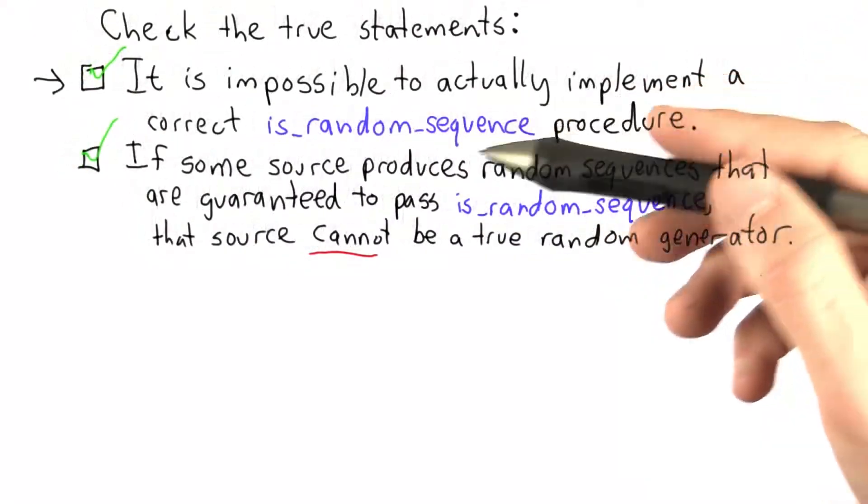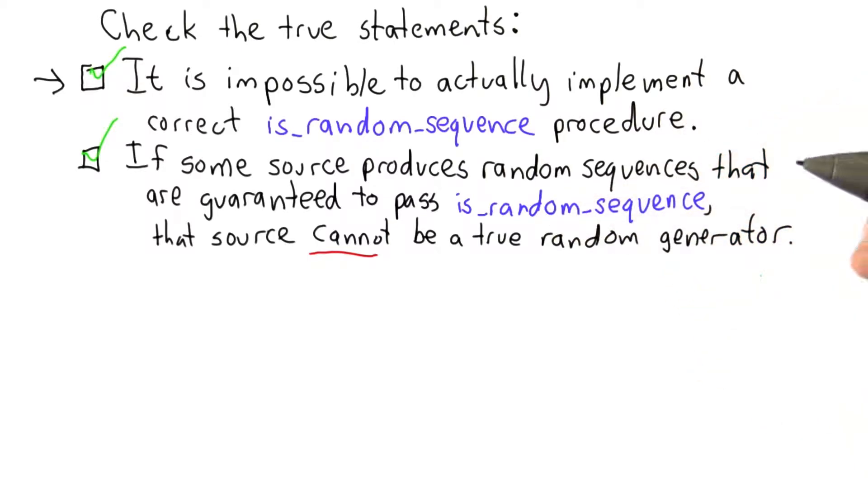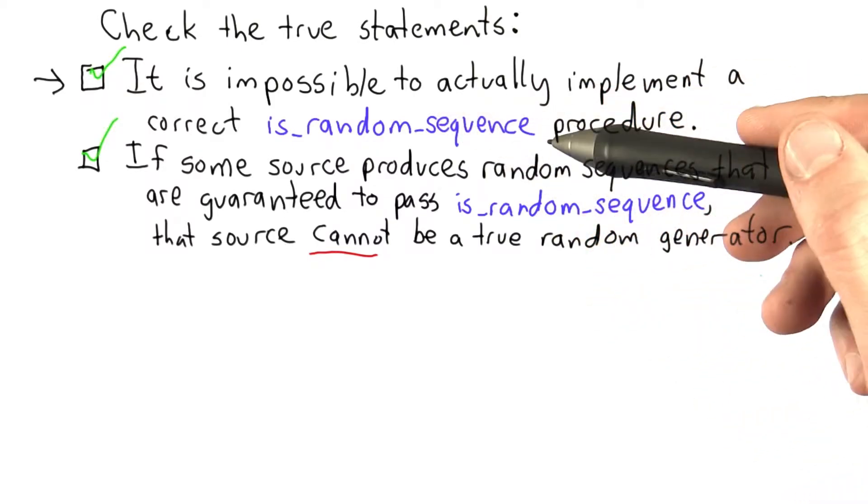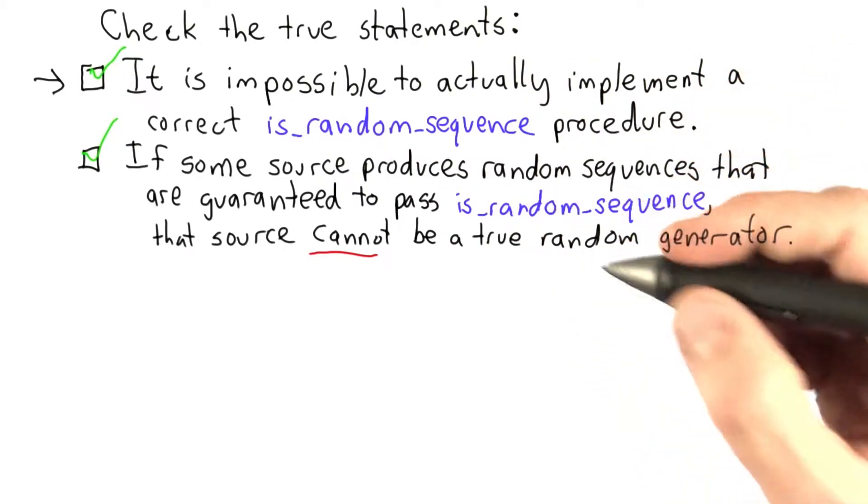So both of these are true. In class, it was shown that it is impossible to produce a random sequence generator. But if we have isRandomSequence, I'm going to sketch out how we could use that to generate a random sequence generator.